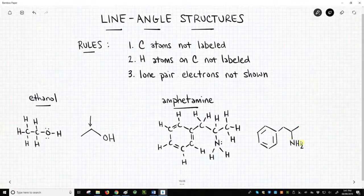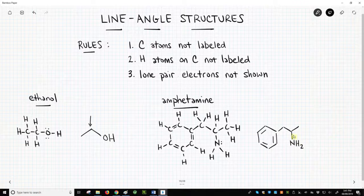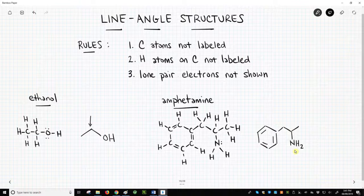This nitrogen has three bonds, one to carbon and two to hydrogens. It needs something else to complete its octet. That something is a lone pair.